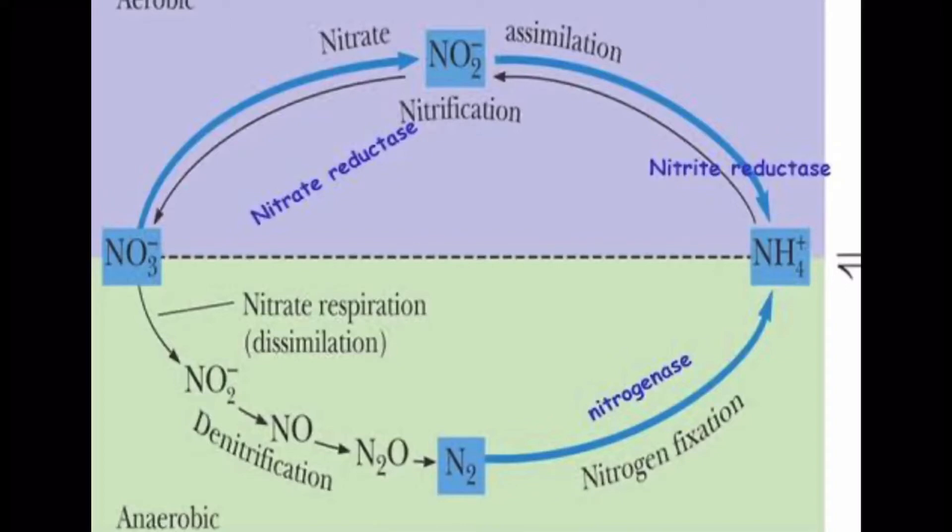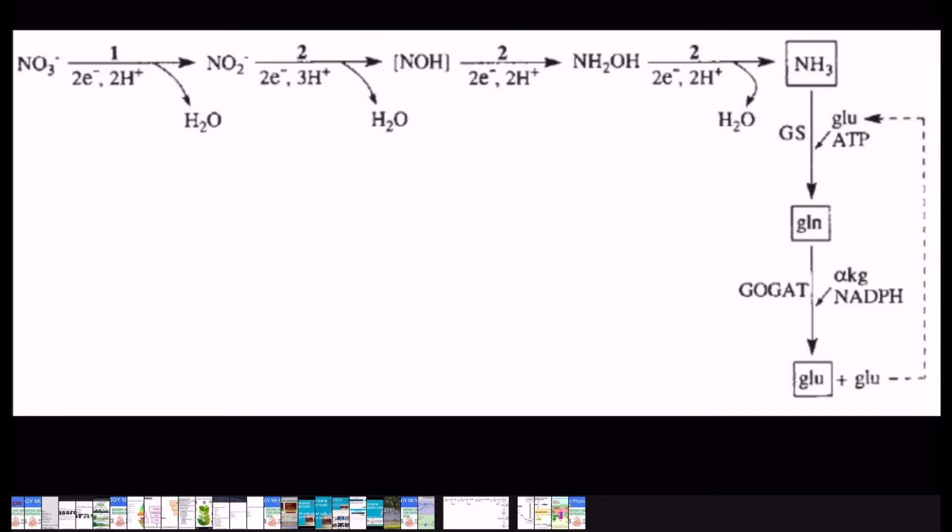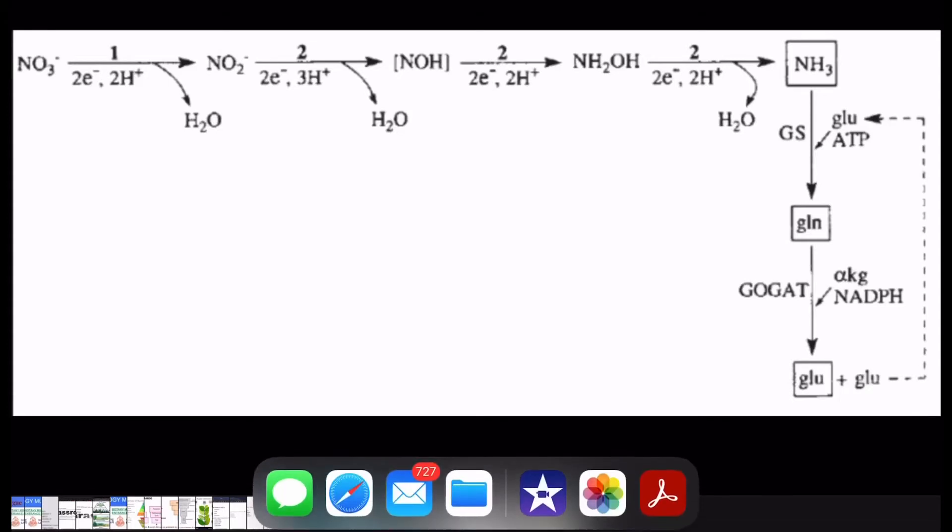Here, in this picture, we can see that nitrate in the presence of NADPH and H plus and two electrons forms the nitrite. Then nitrite in the presence of six ferredoxin reduced and eight H plus and six electrons, it forms ammonia and 2H2O. But then nitrate to ammonia will be two electrons plus six electrons, making it total of eight electrons. So our answer will be number one.